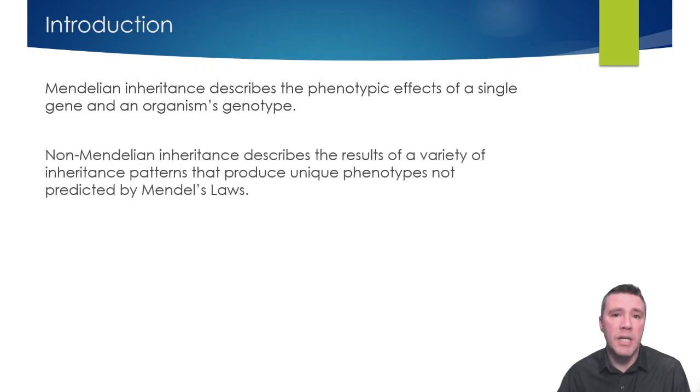Non-Mendelian inheritance expands that understanding to include patterns that are not predicted by Mendel's laws. This includes previously seen patterns such as incomplete dominance and codominance. But an organism's phenotype is the result of something much more complex than simply what alleles it has.